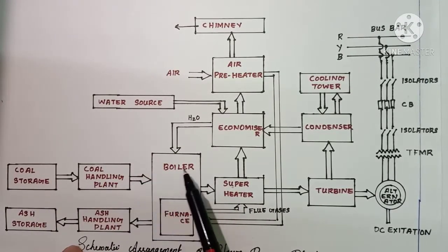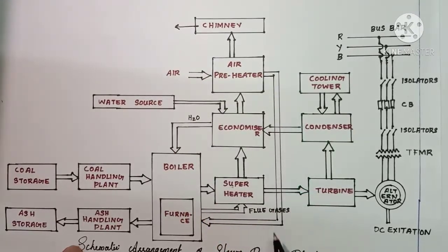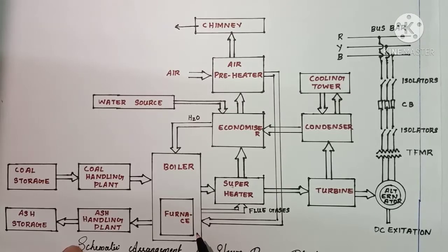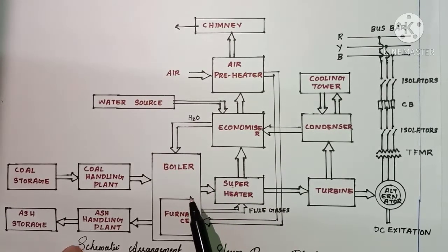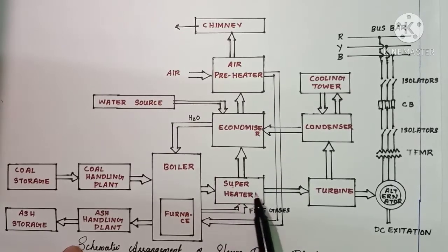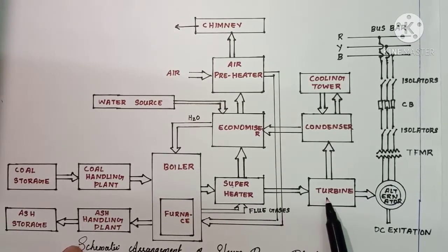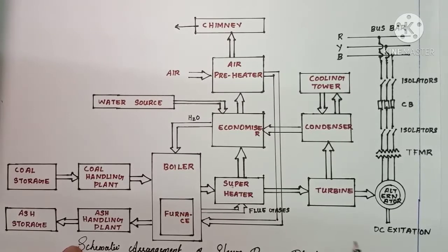To summarize the basic working principle: the coal is first pulverized and fed into the boiler along with feed water and hot air from the air preheater. Combustion produces a large amount of steam energy. This steam enters the superheater, where it is heated to a very high temperature. The superheated steam drives the turbine, generating mechanical energy, which is converted into electrical energy by the alternator.